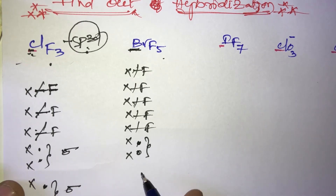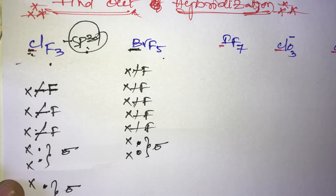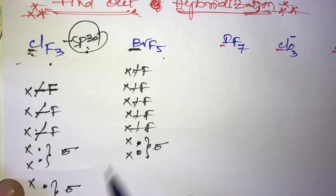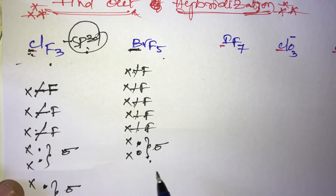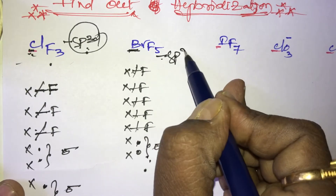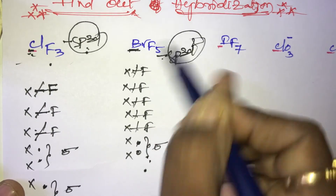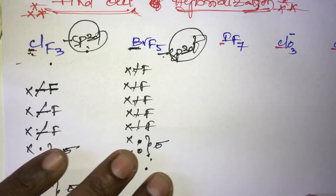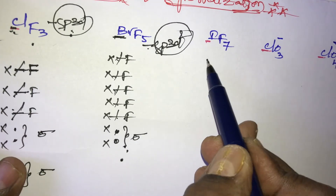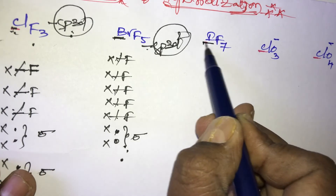After forming five bonds with fluorine, two electrons are left, forming one lone pair. That lone pair is considered as one sigma bond. So total sigma bonds = 5 + 1 = 6. Therefore, the hybridization of bromine in BrF₅ is sp³d².